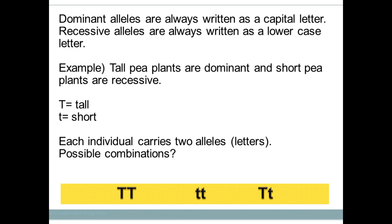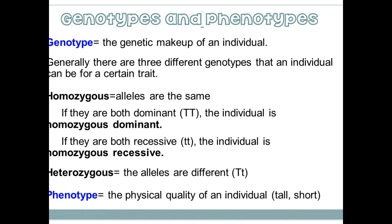Now let's cover genotypes and phenotypes. Genotype is the genetic makeup of the individual — a good way to remember this is the word 'gene' in genotype. Generally there are three types of genotypes. An individual can be homozygous, where their alleles are the exact same letter. Within that, they can be homozygous dominant — where both alleles are the same and since it's dominant, they're both capital letters — or homozygous recessive, where both alleles are the same lowercase letters.